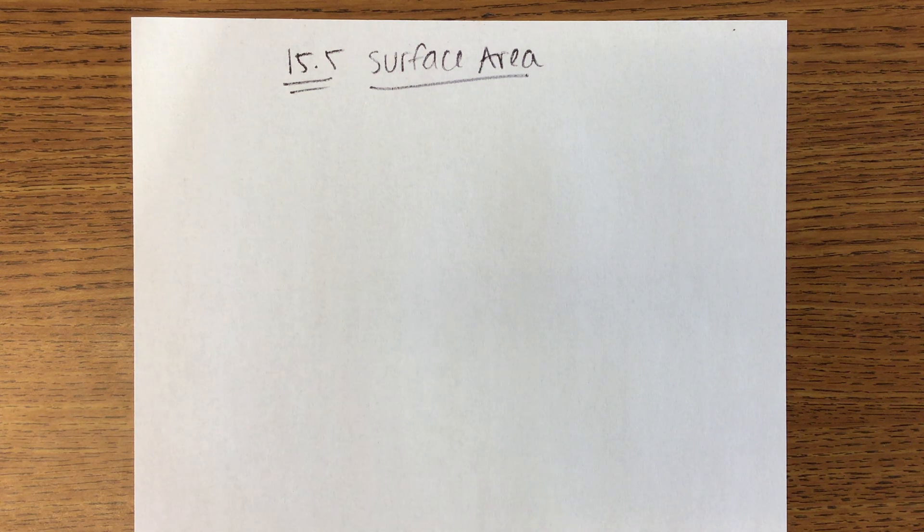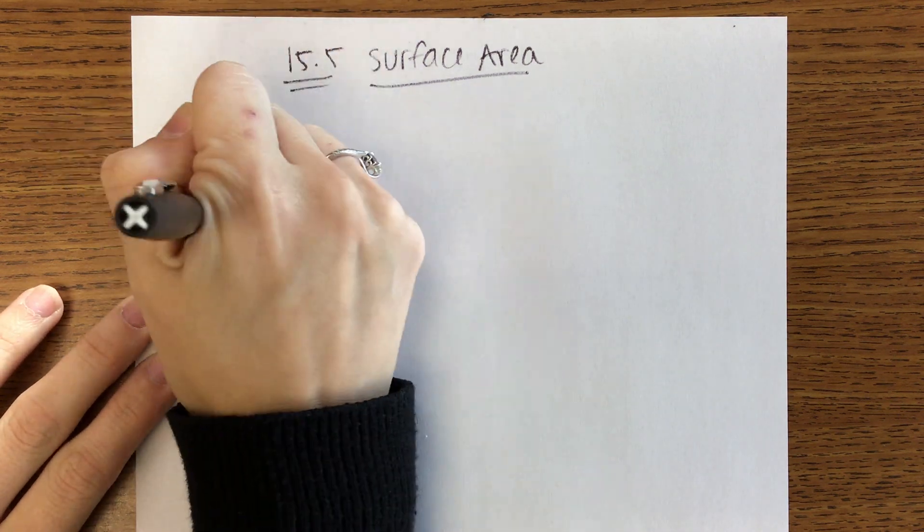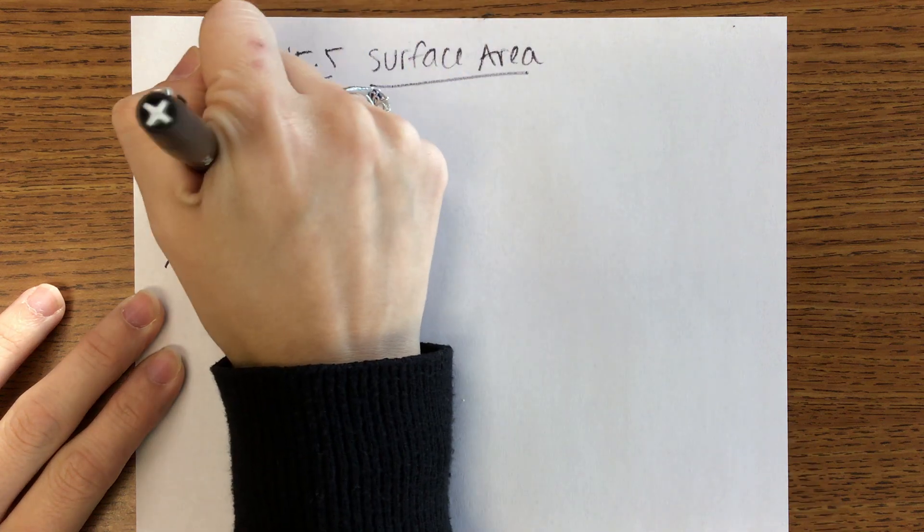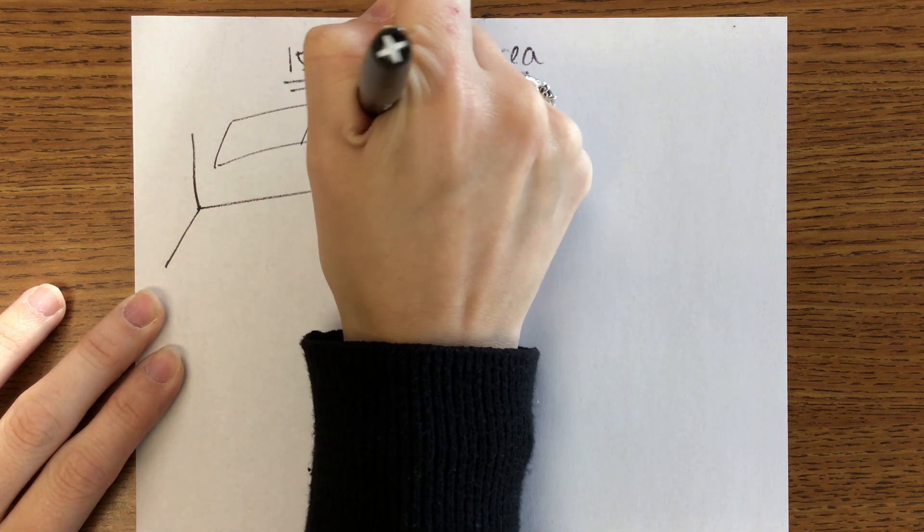Surface area, here's what we're going to be looking at. We have some surface that's a function of two variables, let's call it Z.